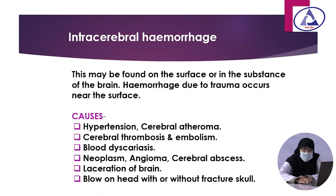Intracerebral hemorrhage may be found on the surface or in the substance of the brain, and hemorrhage due to trauma occurs near the surface. The common causes are hypertension, cerebral atheroma, cerebral thrombosis and embolism, blood dyscrasias, neoplasm, angioma, cerebral abscess, blow on the head with or without fracture of the skull, and laceration of the brain.